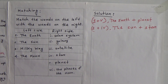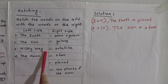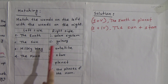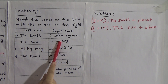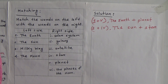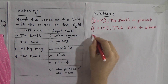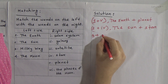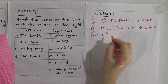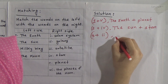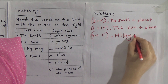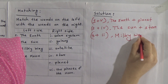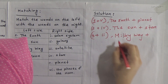Now come to number three: Milky Way. Dear students, we know the Milky Way is a galaxy. That means number three will be matched with number two. So write '3 plus 2'. Milky Way is matched with galaxy.